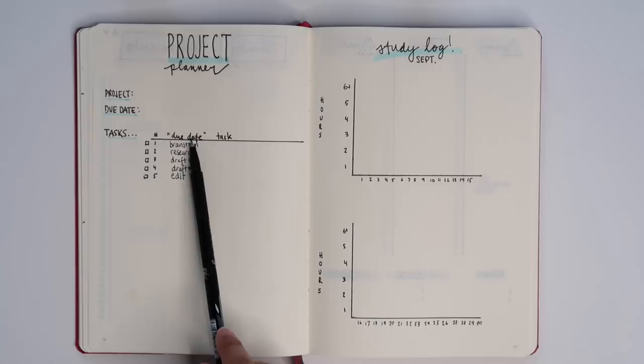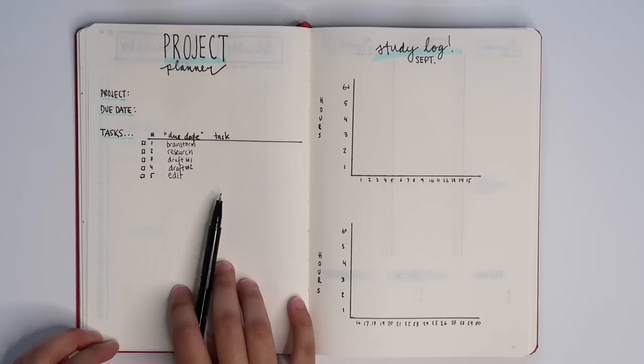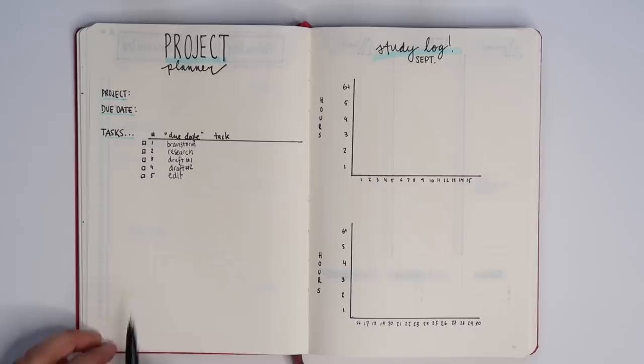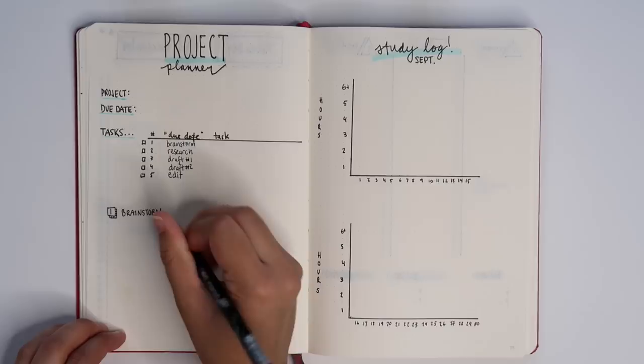But anyways after you fill this out properly, you could if you wanted to assign a page for each task so you can keep organized. I'm going to start the first one here, so for brainstorming you might create a mind map where you can put all your ideas. I really like doing this at the beginning of a project.